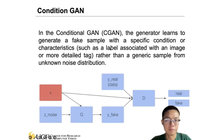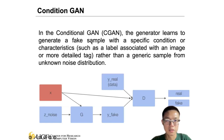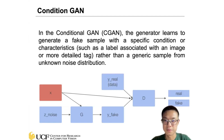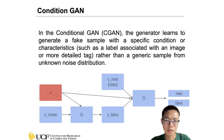So that's the basic for the GAN network. Let's look at another variant, which is conditional GAN. In the conditional GAN, the generator learns to generate a fake sample with a specific condition, rather than just generating a generic sample from some unknown distribution.